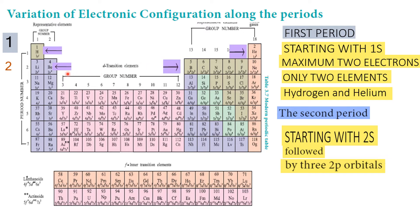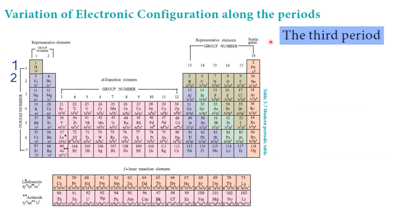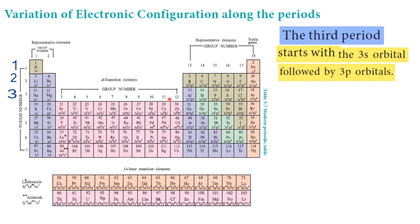The second period starts with lithium and ends with neon, totaling 8 elements. The third period starts with 3s1 and is followed by the 3p orbital. The first element is sodium and the ending element is argon, with atomic number 18 and configuration 3s2 3p6, giving a total of 8 elements in the third period.